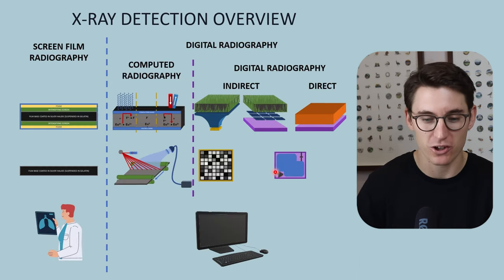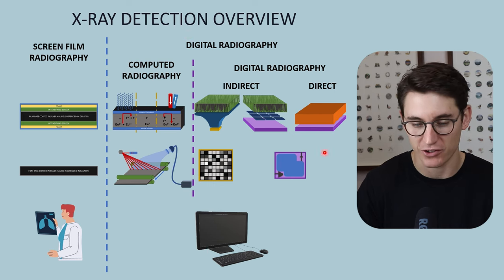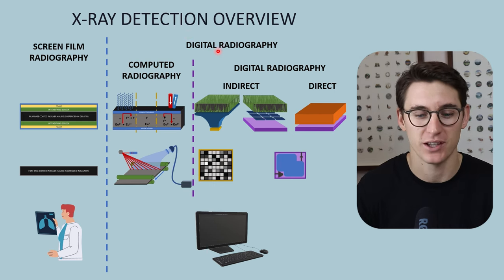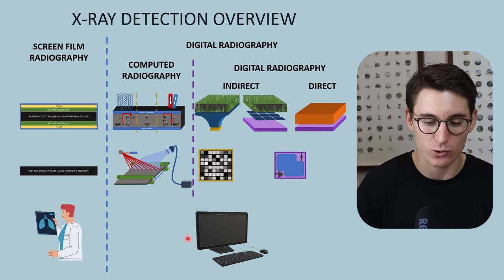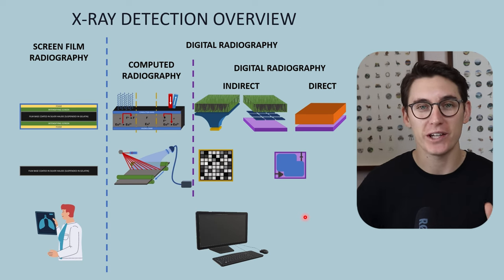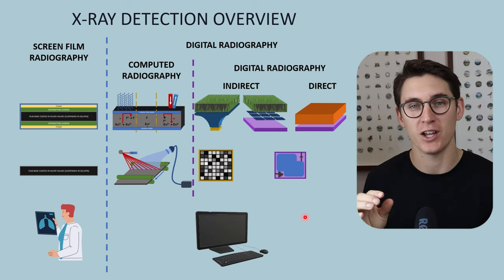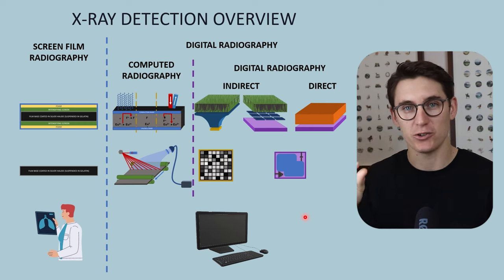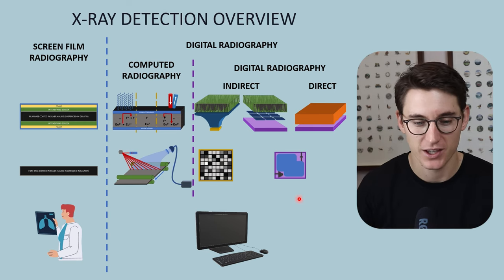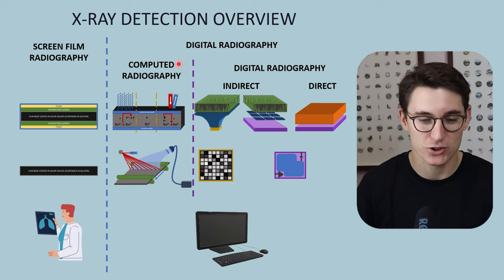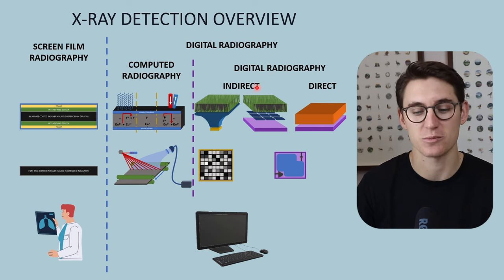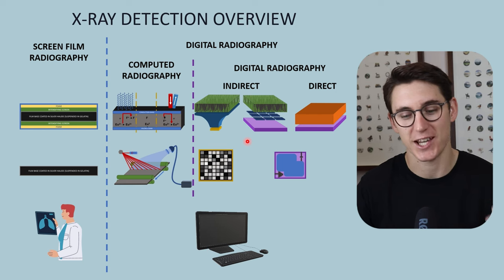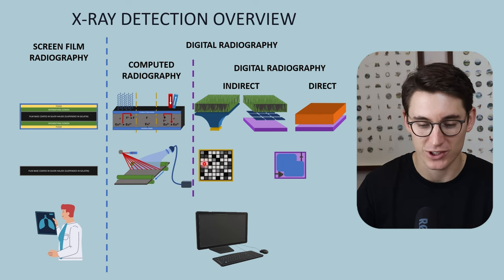Computed radiography falls under the broad overarching category of digital radiography. When we talk about digital radiography, we are talking about the final radiograph we create — a digital radiograph on a computer screen where grayscale pixel values represent each pixel on our image. We can further subdivide that into computed radiography systems and digital radiography systems, based on the way in which we process those x-rays.